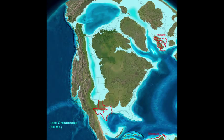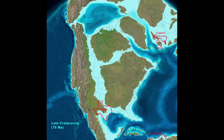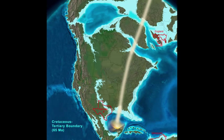The North Atlantic widens as Africa and South America begin separating from one another. This is the end of the Mesozoic Era and the beginning of the Cenozoic — a very important time. A huge bolide or meteor struck the Yucatan Peninsula of Mexico, and the devastation was felt worldwide. The most important result was the extinction of not only the dinosaurs, but as many as 75% of all plant and animal species as well.